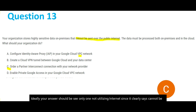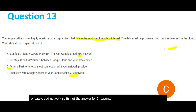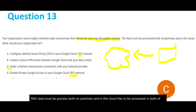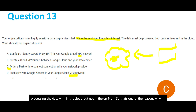Options A and D use VPC networks — virtual private cloud networks — and are not the answer for two reasons. First, VPC is within the cloud only; it processes data within the cloud but not on premises. But the question requires processing in both places. Second, VPC also utilizes the public internet. So we eliminate A and D.